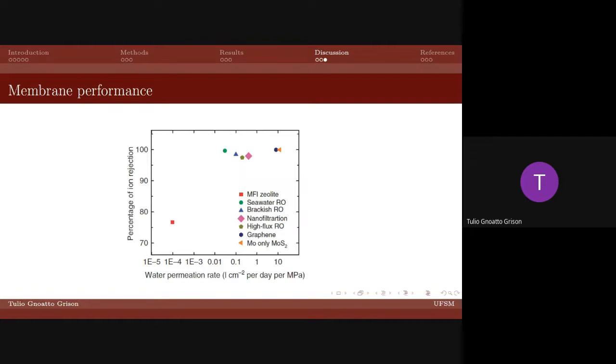And on the x-axis is the flow of filtered water per unit of applied pressure. The lower the pressure you require to achieve a given flow, the lower the energy cost of the process, and therefore it is more viable, including from an economic point of view.